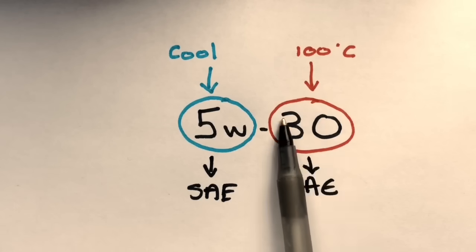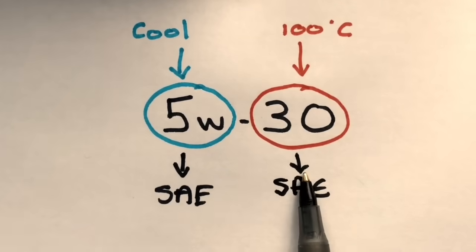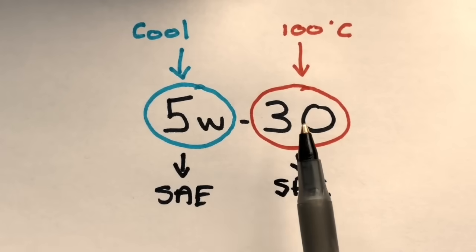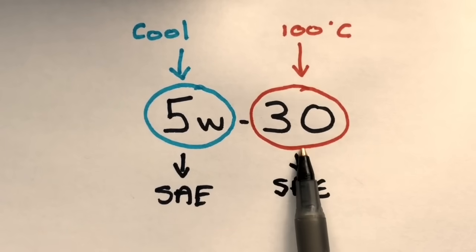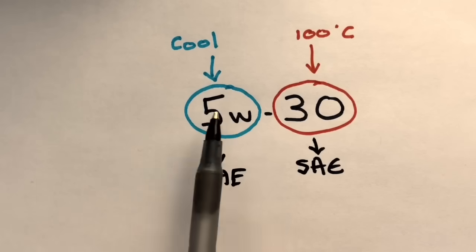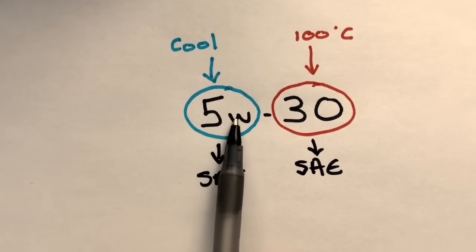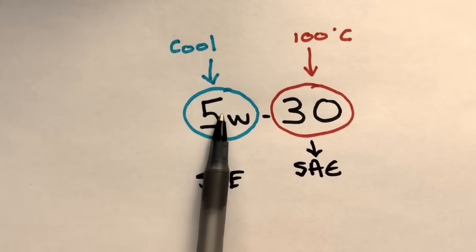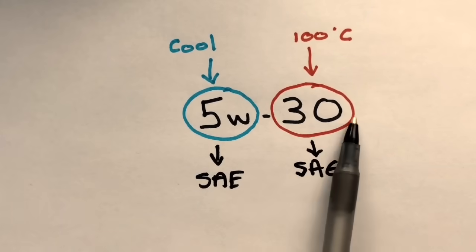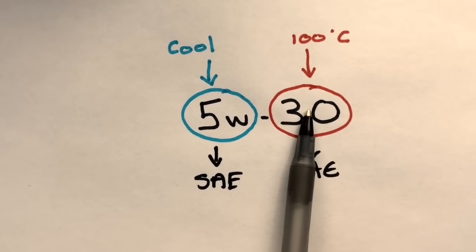And when it gets up to temperature, it acts like an SAE 30 so that it's not too thin, because if it gets too thin at this temperature, it will lose its lubricant efficiency and put wear on the engine. The way I remember these numbers is this W here—I associate with being winter. So this is the winter condition, the cold condition of the oil. And of course the second number is what it's like at 100 degrees centigrade.